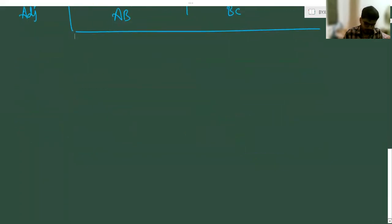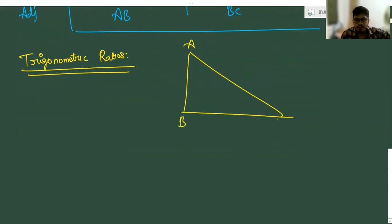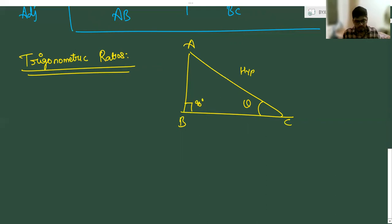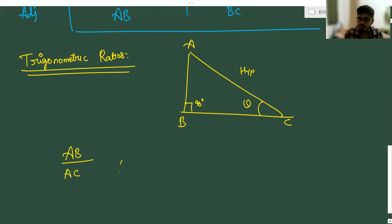Now let us move on to the trigonometric ratios. Consider this is the right angle triangle ABC. This is the 90 degree, so opposite to the 90 degree is fixed, which is the hypotenuse. Now considering angle theta, you need to identify how many ratios can you define with three sides. First: AB by AC. Next: AB divided by BC. Then the reciprocals of these — AC divided by AB, AC divided by BC, and BC divided by AB. That covers all the possible ratios.